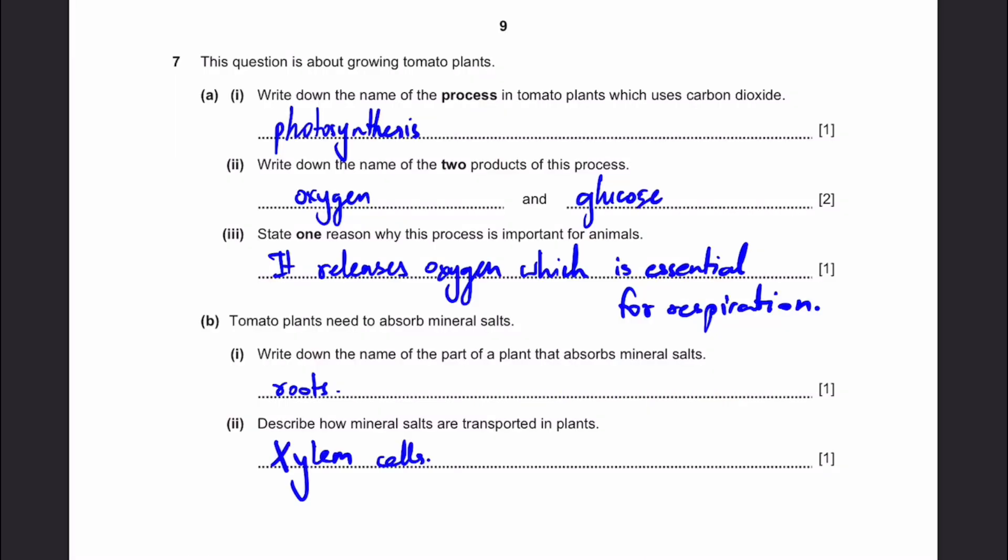Tomato plants need to absorb mineral salts. Write down the name of the part of a plant that absorbs mineral salts. Simply, the roots. It absorbs mineral salts and also water through root hair cells.